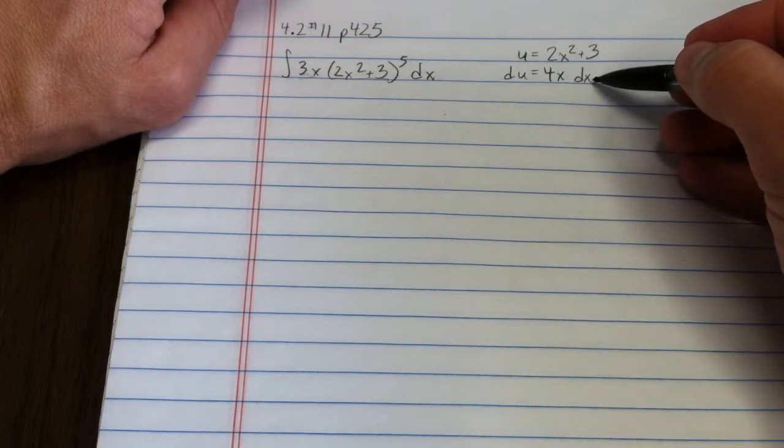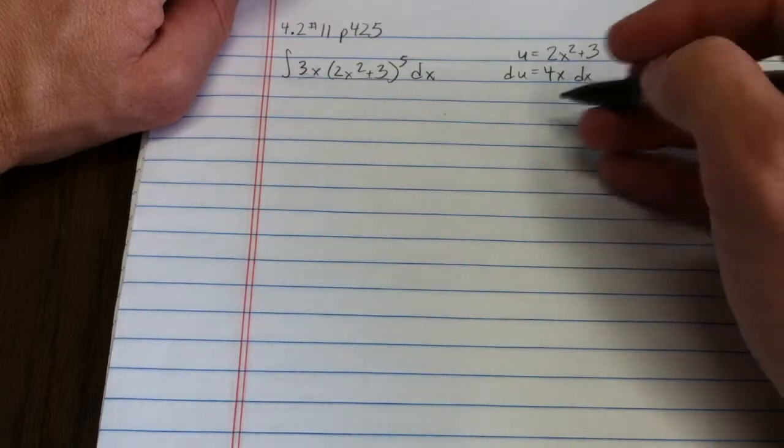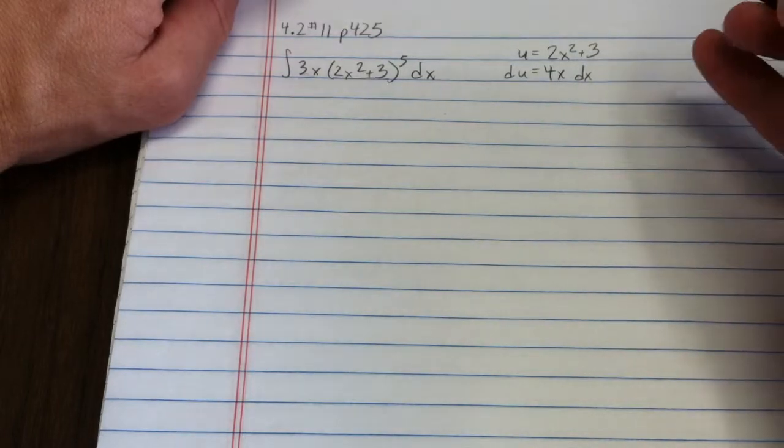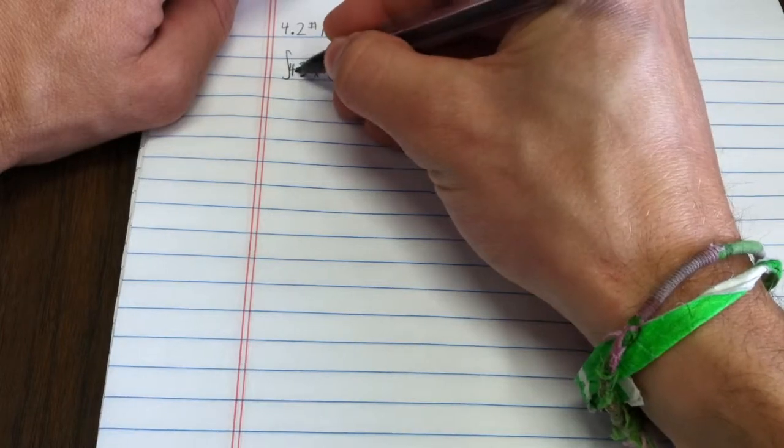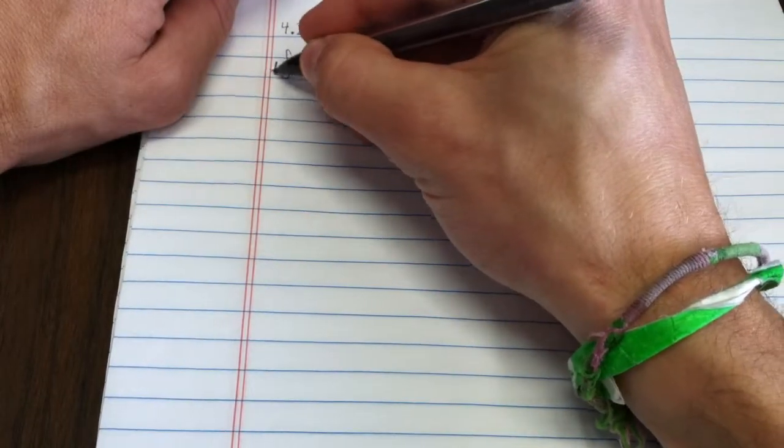Now, I don't really have a 4x, but if I needed a 4 desperately, I guess I could get one. How about I put an extra 4 in here? I'll multiply by 4 and 1 fourth.